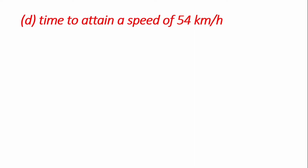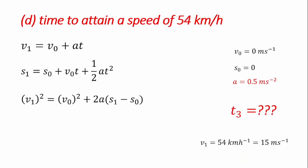The next question is to calculate the time to attain a speed of 54 km per hour. Certain variables remain the same: the initial velocity is still 0 because the vehicle was initially at rest, the acceleration is constant at 0.5 m/s², and the initial position x0 is 0. We are looking for a new time, T3, for the velocity to equal 54 km per hour, which is equivalent to 15 m per second. Walking through our formulations, the first equation is very suitable since we are looking for time and we have final velocity, initial velocity, and acceleration.